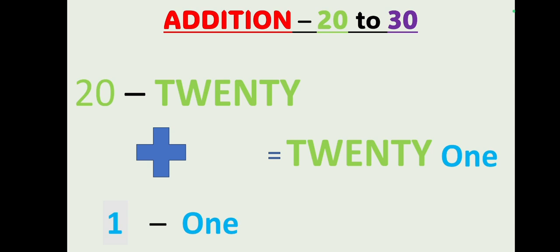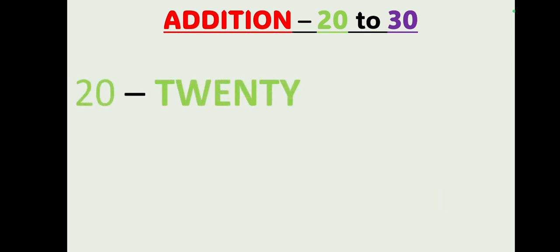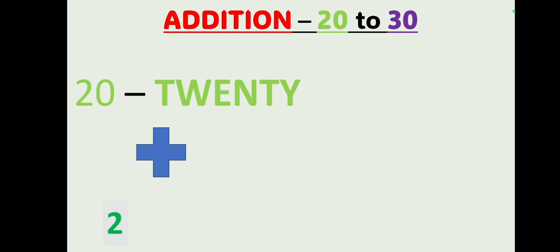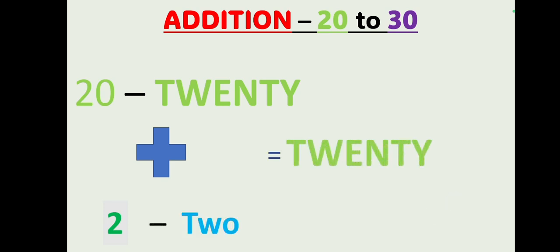To learn 22, we use 20 plus 2. First we write down the number 20 — T W E N T Y — then we write down the number 2 — T W O — and we get 22.